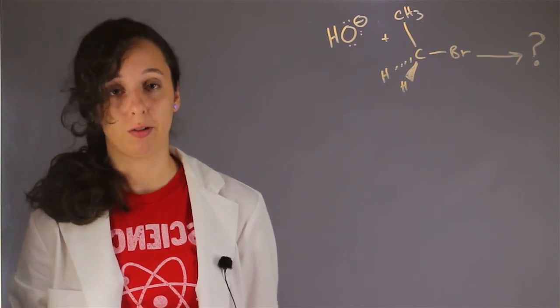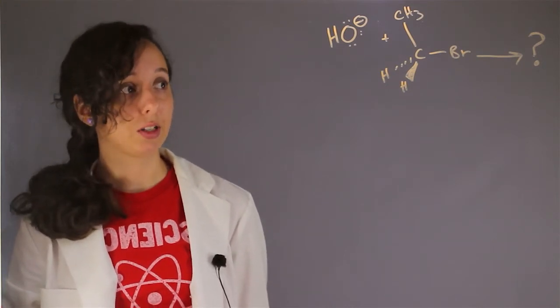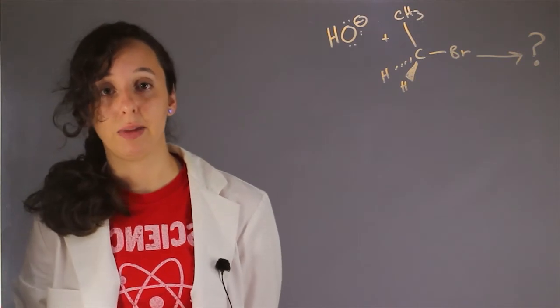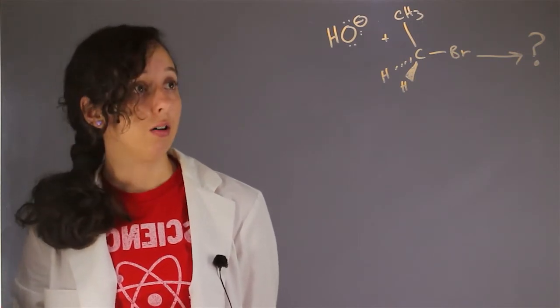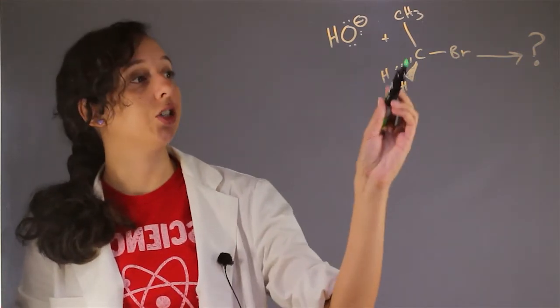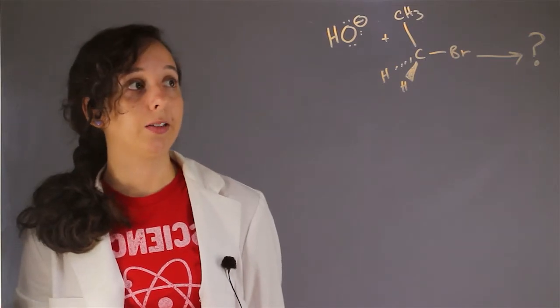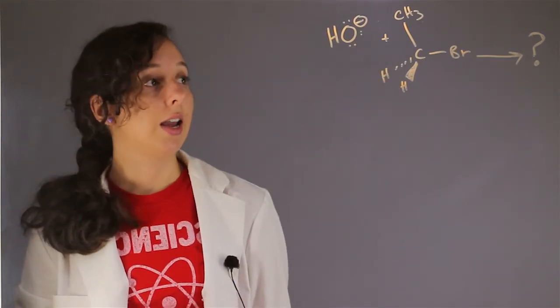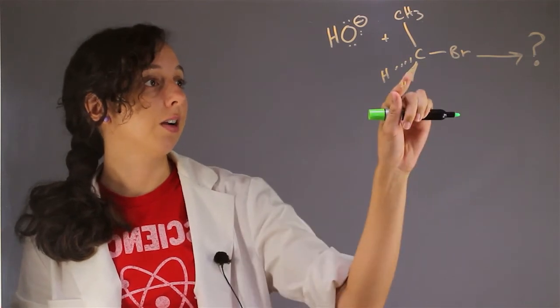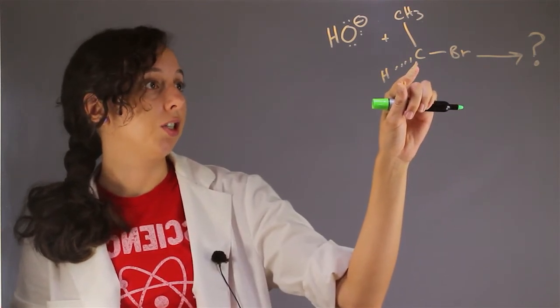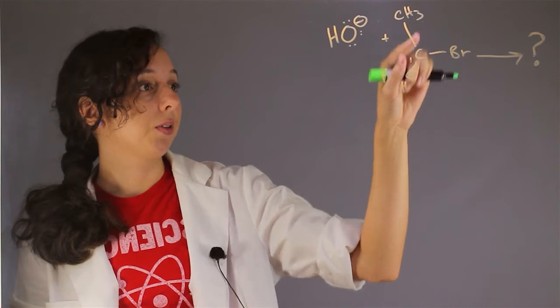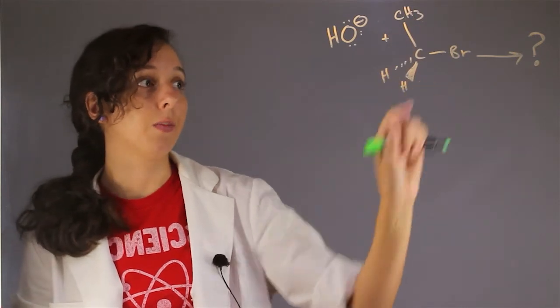If we don't know what the product is, we need to basically observe what we have and make an educated guess. So if I look at these two reagents I can immediately notice the negative charge on oxygen and I also notice over here that this carbon is bonded to a methyl group and two hydrogens and a bromine.